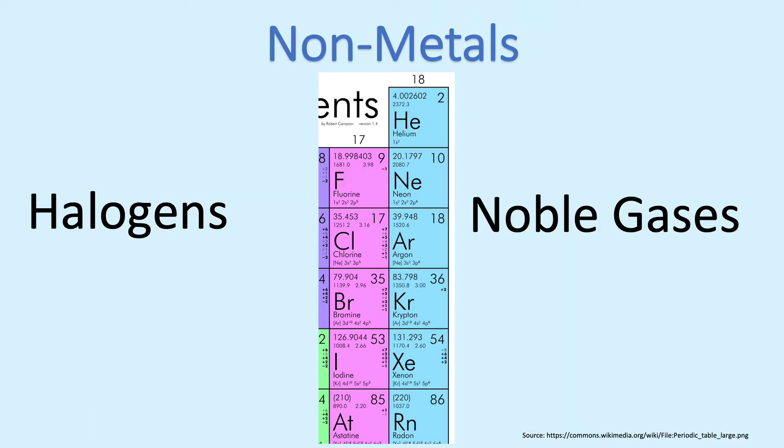For nonmetals, there are two groups that have names. On the far right, you'll find the noble gases, and next to them, in group 17, you'll find the halogens.